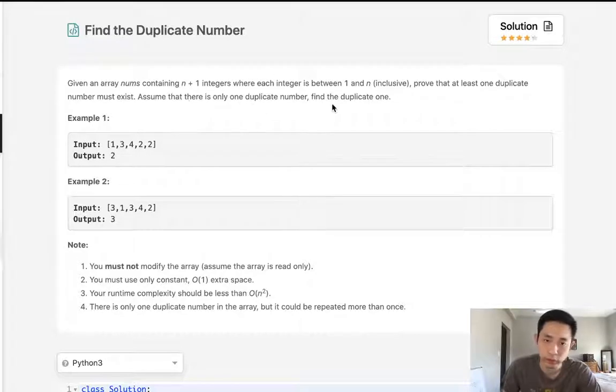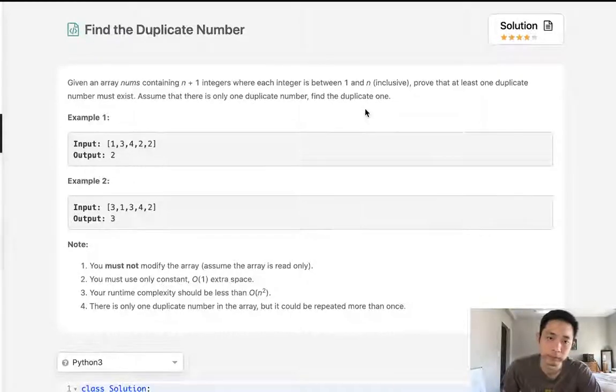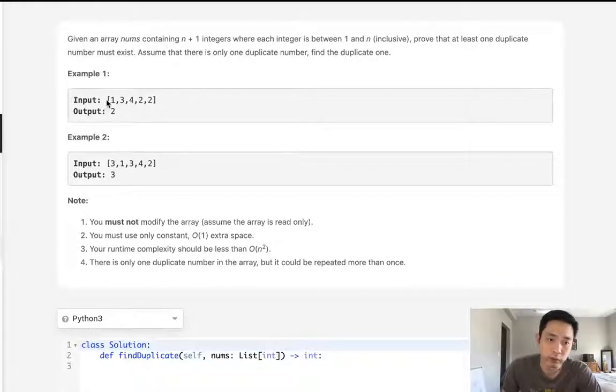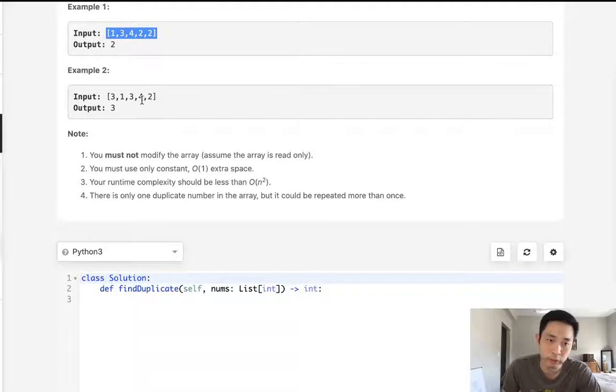Assume that there's only one duplicate number, find that duplicate number. Okay, say we're given a list like this: 1, 3, 4, 2, 2 is the duplicate number. Same thing here: 3, 1, 3, 4, 2.